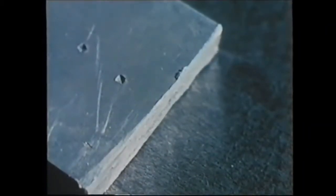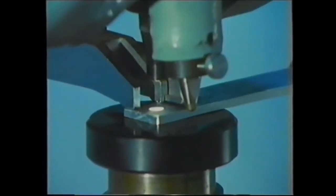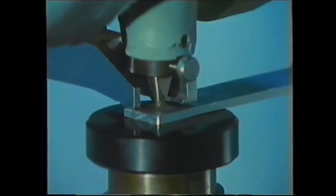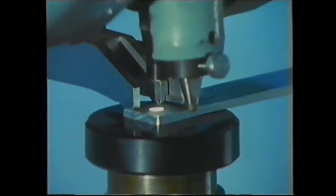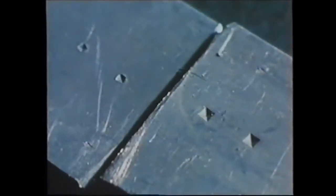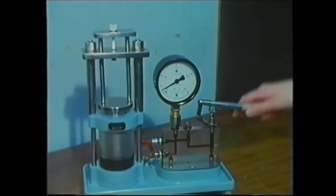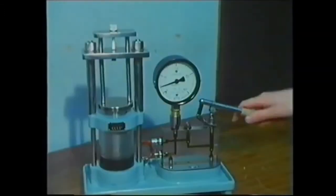How does this compare with the size of the dent produced in a piece of recrystallized aluminium? It's much deeper, so recrystallization has restored softness. And what about the tensile strength? First, the cold-worked aluminium.